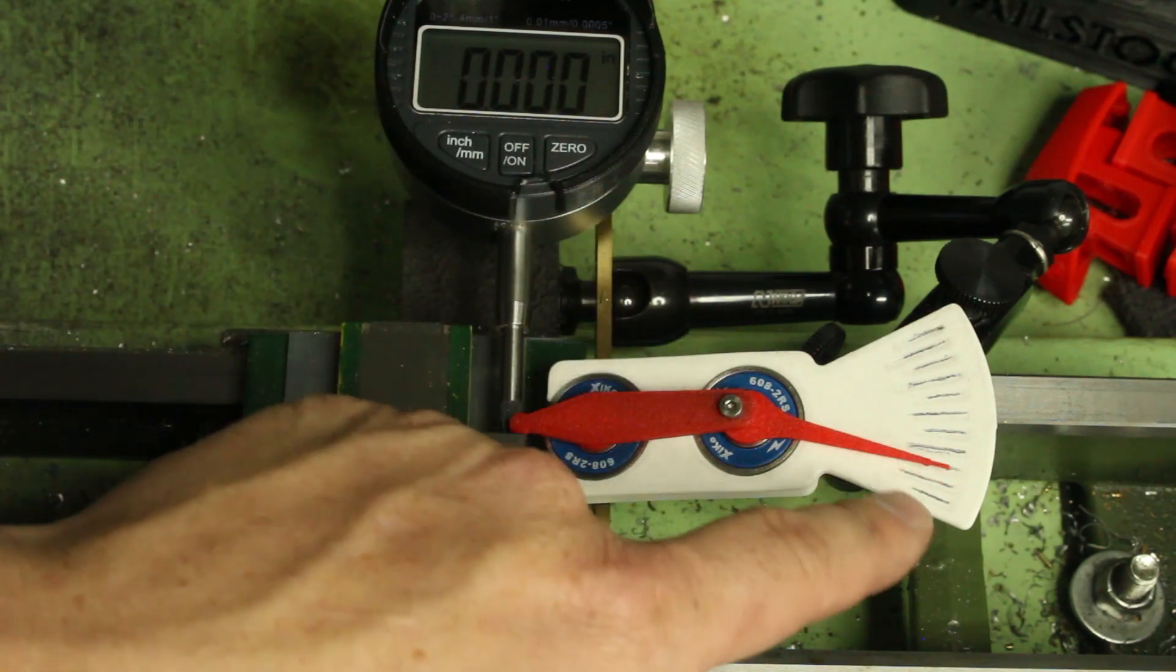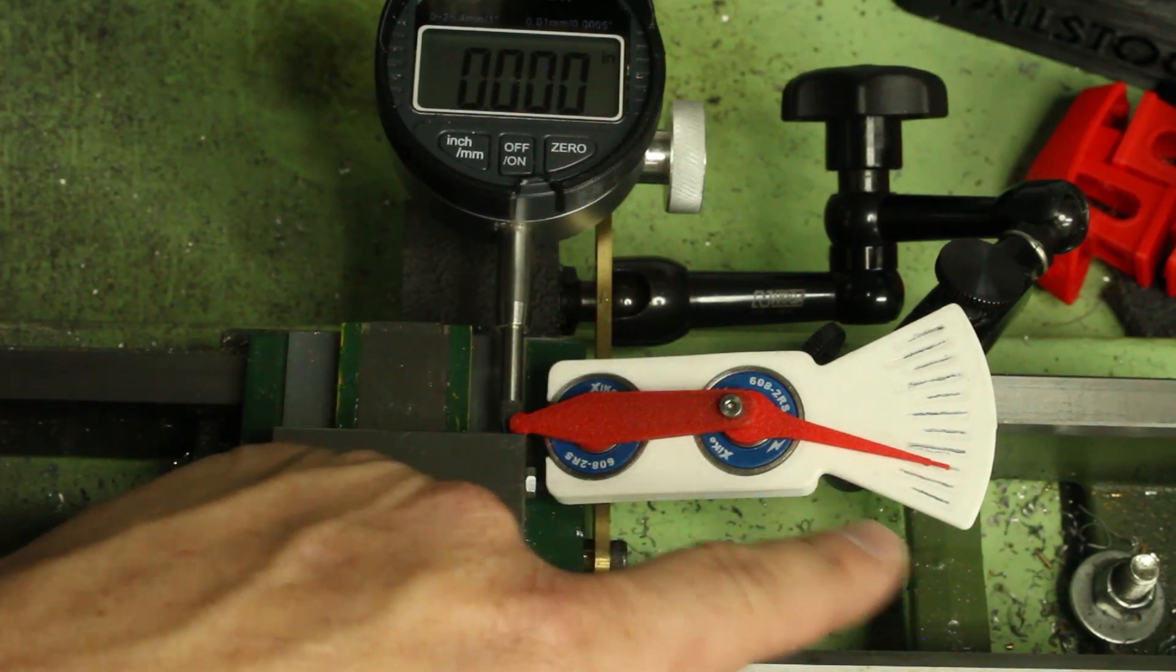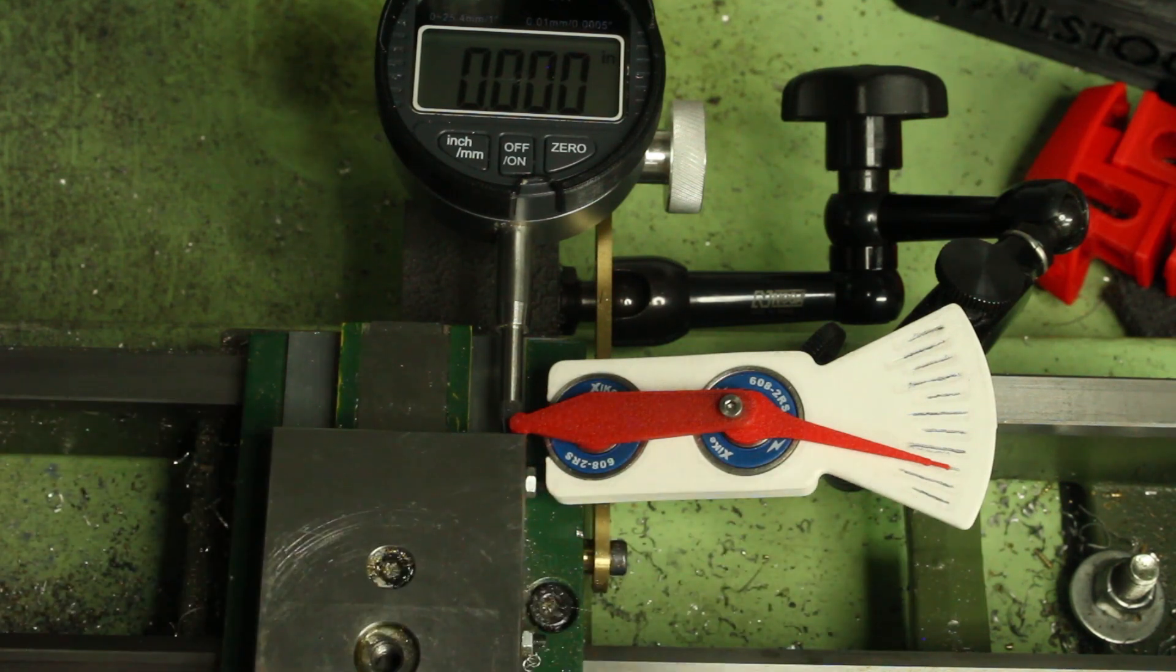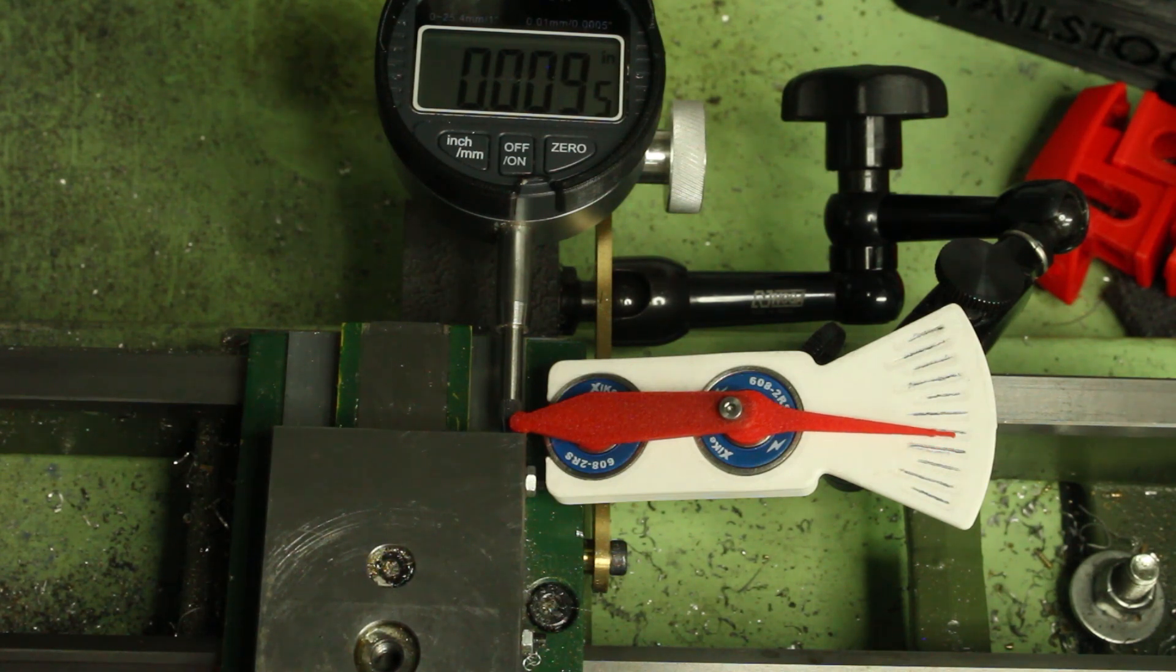Alright, I zeroed out the indicator on the third graduation. This thing is supposed to be graduated at 0.005, and let's just run it through some numbers here. That's looking pretty good.